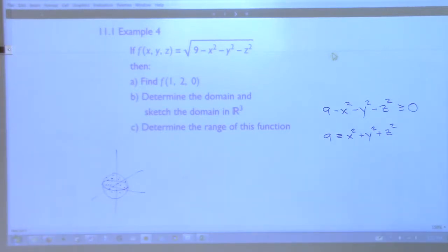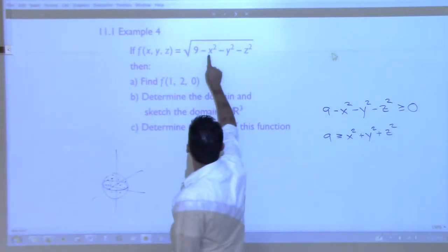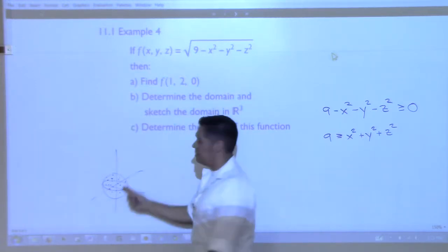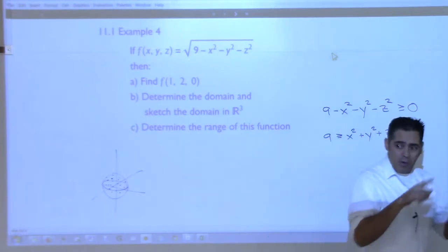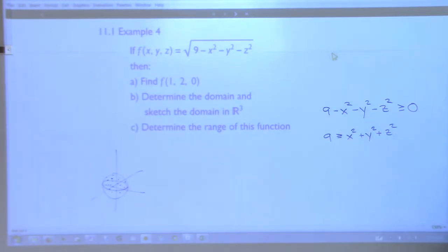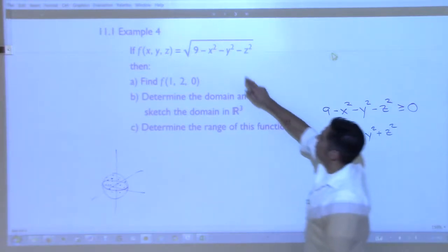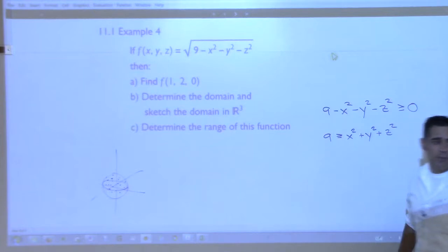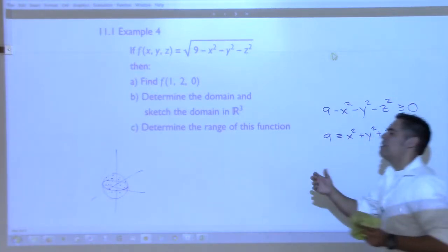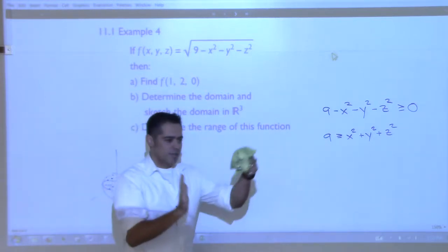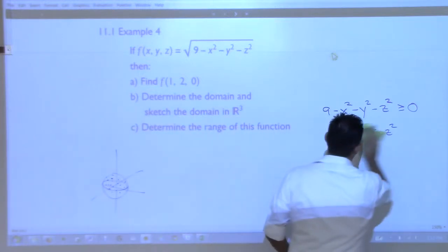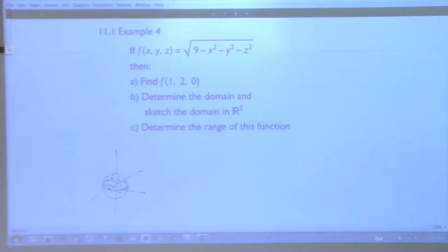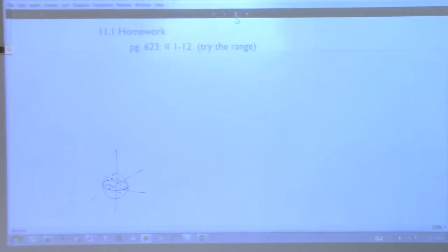We can also talk about the range. The biggest value we can get out is 3 — when x, y, z are all zero, we get √9 = 3. The smallest value is 0 — for example, let y and z be zero and x be 3, giving √(9−9) = 0. So the outputs are stuck between 0 and 3. That wraps up 11.1.